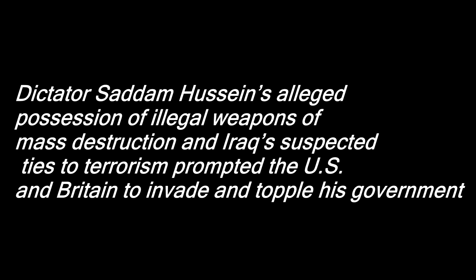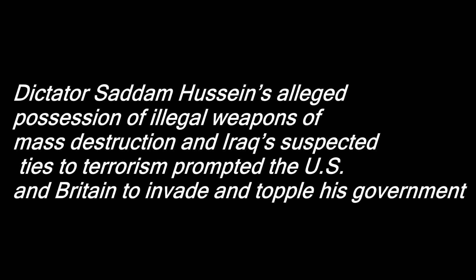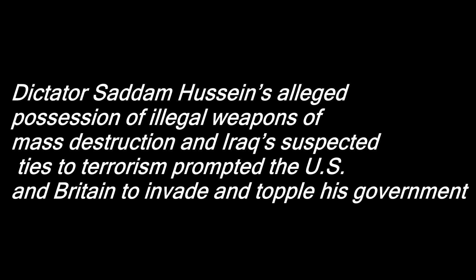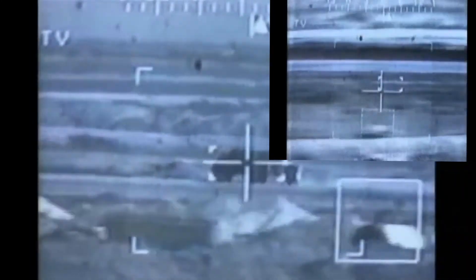The Iraq War began in 2003. Dictator Saddam Hussein's alleged possession of illegal weapons of mass destruction and Iraq's suspected ties to terrorism prompted the US and Britain to invade and topple his government. Iraq was defeated and Saddam Hussein was removed from power. American and some coalition troops remained in Iraq fighting and rebuilding, while Shiites and Sunnis began fighting each other — many observers considered the situation a civil war. In December 2003, US troops captured Saddam Hussein near his hometown of Tikrit; he was found guilty of crimes against humanity and executed in 2006.